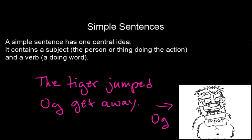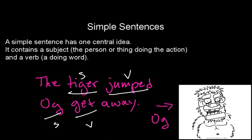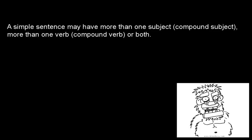We have subject and verb — that makes this a simple sentence. Simple sentences you would imagine are generally always simple, but that's not the case, because a simple sentence can have more than one subject. We call this a compound subject, and it can have more than one verb — we call that a compound verb.